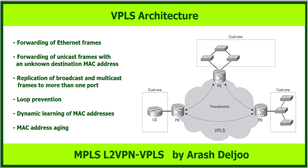First, forwarding of Ethernet frames. Forwarding of unicast frames with an unknown destination MAC address — when we receive an Ethernet frame with an unknown destination MAC address, the Ethernet switch will flood it to all other ports except the receiving port. After that, replication of broadcast and multicast frames to more than one port. And then loop prevention with STP. And then dynamic learning of MAC addresses. And finally, MAC address aging.